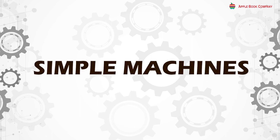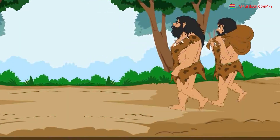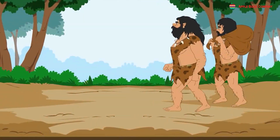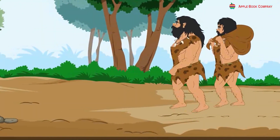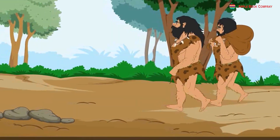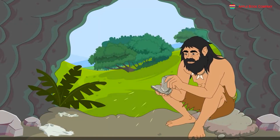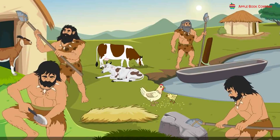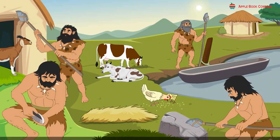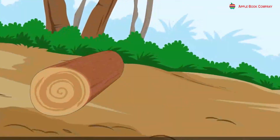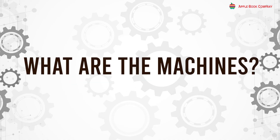Simple Machines. At the dawn of civilization, early men used their hands to move objects from one place to another and their teeth to cut things. With passing time, they started using stones to make their work easier. They also found ways to sharpen stones to use them as knives. Gradually, man searched for different ways to make work easy. What are machines?